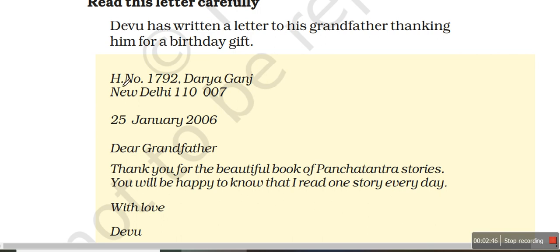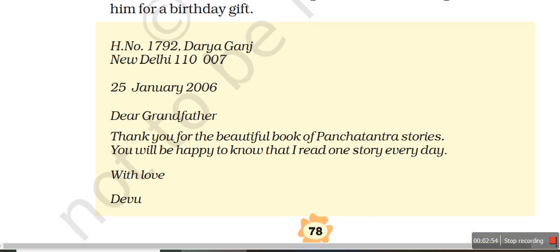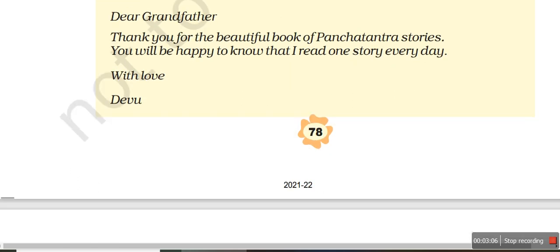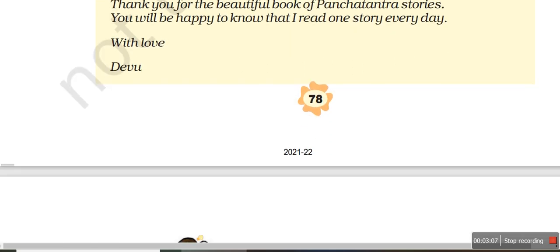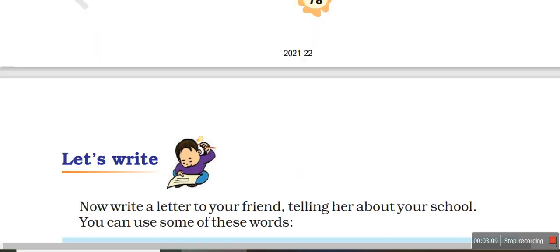Now read this letter carefully and then you can write it down. What you have to do first is write down the address, date, and to whom you are writing — means your dear grandfather, your sister, or your friend — and then the body of the letter, meaning what you want to write. Then write 'with love,' 'with respect,' or 'sincerely,' and then your name. In this way you will write a small letter to your parents, guardians, or friends.